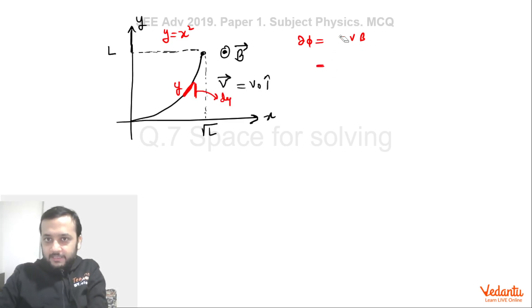So EMF can be written as dφ equals dL·v·B. So dL now I am replacing by dy. So dφ will become velocity is v₀, magnetic field function was given as B₀(1 + y/L)^β into dy.